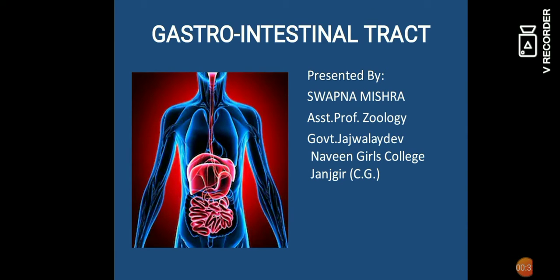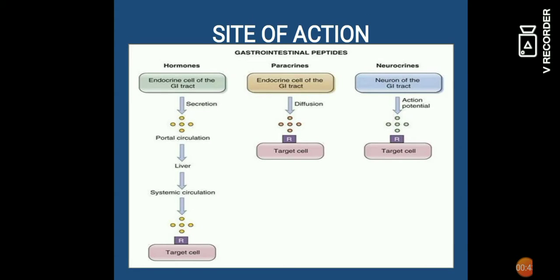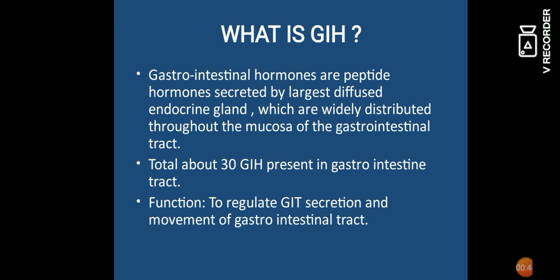आप इमेज में देख रहे हैं gastrointestinal tract है, जिसमें उपस्थित हार्मोन के बारे में हम अध्ययन करेंगे। अब GIH है क्या? Gastrointestinal हार्मोन और peptide हार्मोन, secreted by largest diffuse endocrine gland। Gastrointestinal tract के mucosa में पूरी distribute रहती है diffuse endocrine gland, जिससे निकलते हैं gastrointestinal हार्मोन। लगभग 30 gastrointestinal हार्मोन हमारे gastrointestinal tract में उपस्थित हैं। इनका मुख्य काम है gastrointestinal tract के secretion को regulate करना और उसके movement को regulate करना।